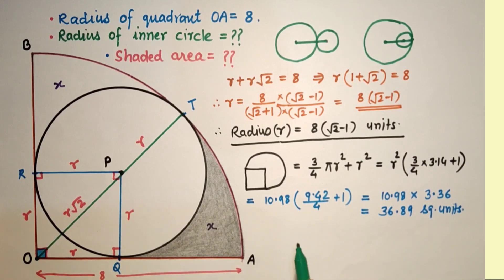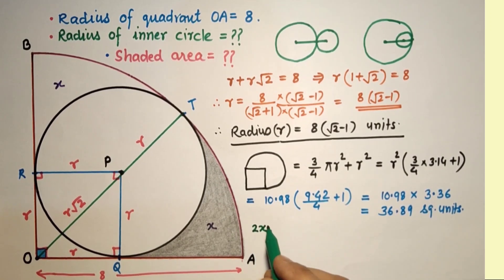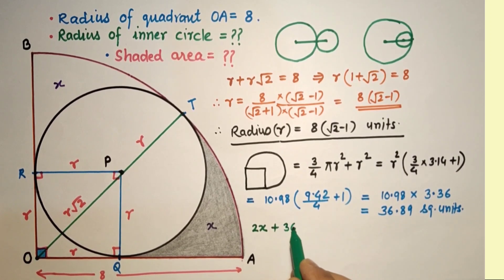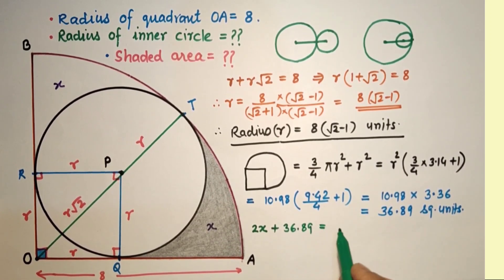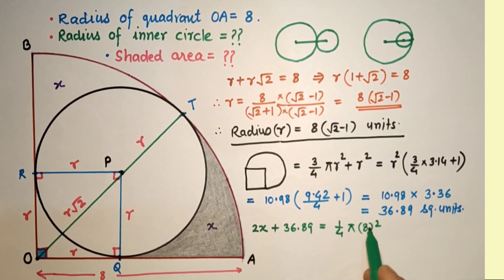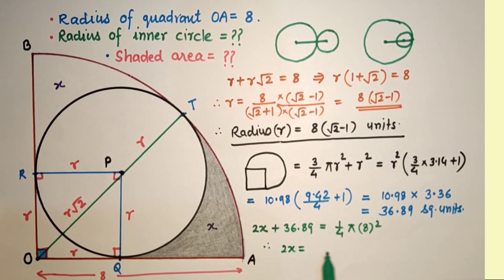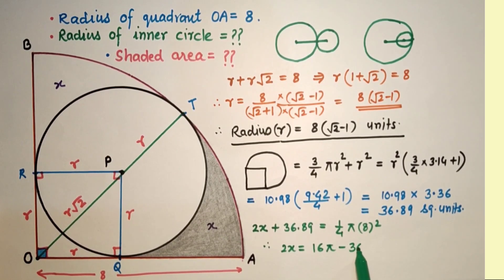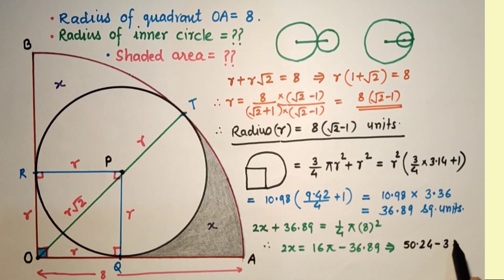Now we can say that x plus x plus this area equals the quadrant's area. So 2x plus 36.89 equals 1/4 π × 8². 64 by 4 is 16π. So 2x equals 16π minus 36.89.